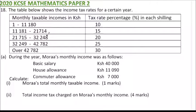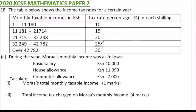This is question number 18, 2020 KCSE Mathematics Paper 2. We are told the table below shows the income tax rate for a certain year. The monthly taxable income brackets in Kenyan shillings are: 1 to 11,180 at 10%; 11,181 to 21,714 at 15%; 21,715 to 32,248 at 20%; 32,249 to 42,782 at 25%; and over 42,782 at 30%.